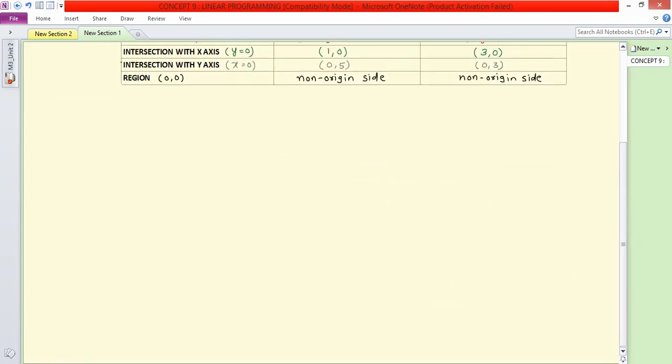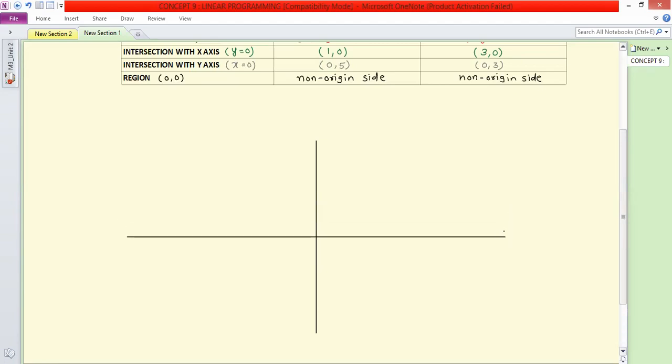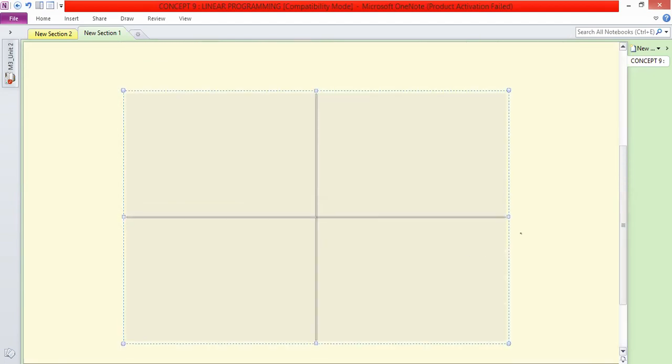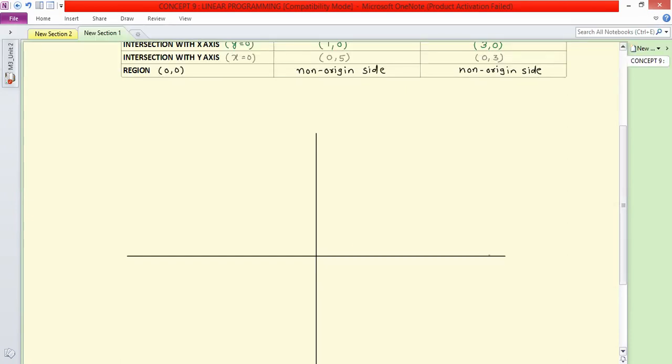Now we need to prepare a table and draw a graph from this table. Let us draw the x and y axes. This is your origin, this is the x-axis, this is the y-axis. Let's do the markings: one, two, three, four, five, six on both axes.